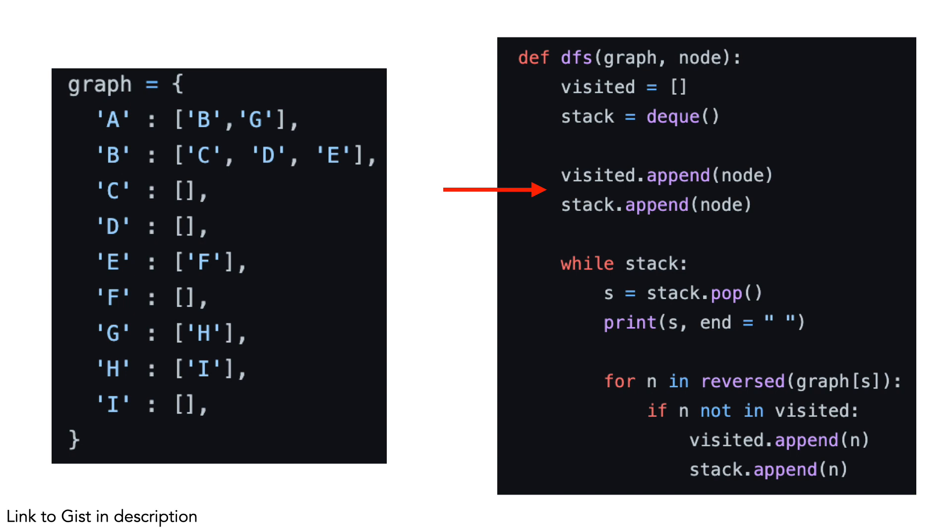We first add the root node to both the visited list and the stack. We loop while the stack is not empty, popping the top element from the stack.